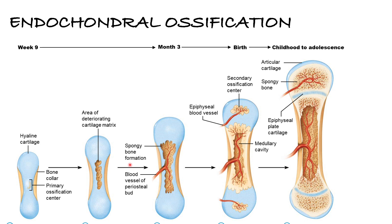We're going to break down that cartilage before ossification takes place. One important thing to mention is that cartilage does not become bone. Sometimes we think it hardens or calcifies and becomes bone — but no, just like an apple would never become an orange, they are two separate types of tissues.